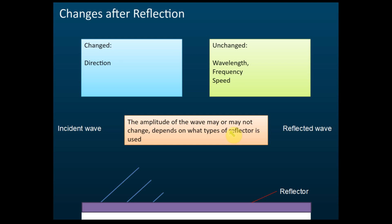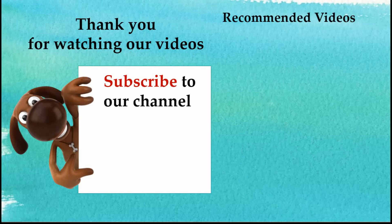For circular waves, for sure it will change. The amplitude will reduce. But for a plane wave, it can remain unchanged if the reflector is good. So direction will change, wavelength, frequency, and speed won't change, but the amplitude may change or may not change. It depends on the reflector and also the shape of the wave.